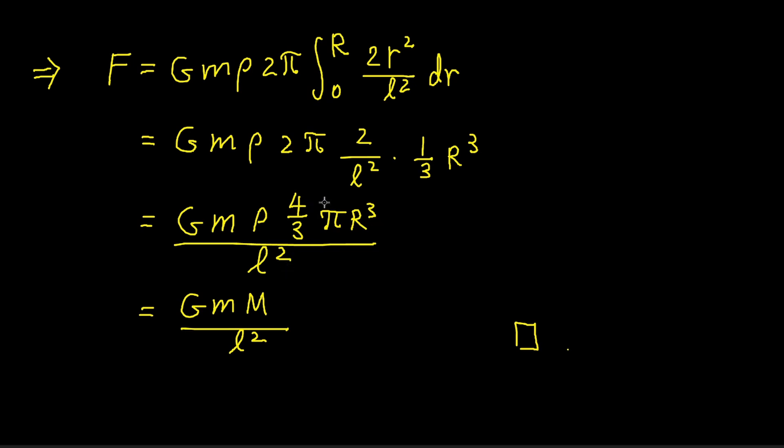But notice that 4/3 π r³ is just the volume of the sphere. Multiply that by the density, and we get the total mass big M of the spherical body. So the result now reads G times little m times big M divided by the distance between the point mass and the center of the spherical body, that is L². And this is exactly what we wanted. And this finishes the proof.